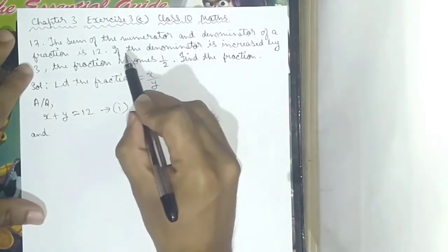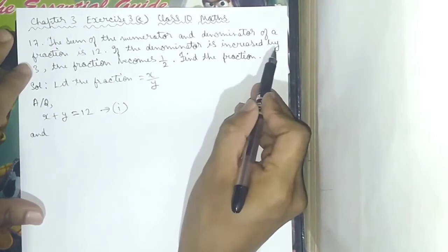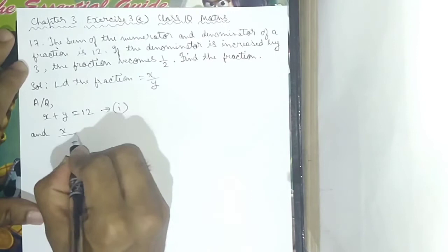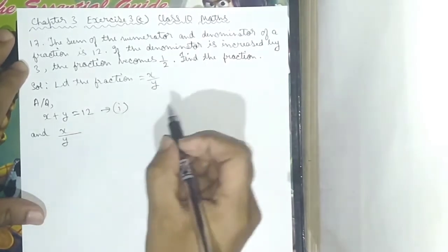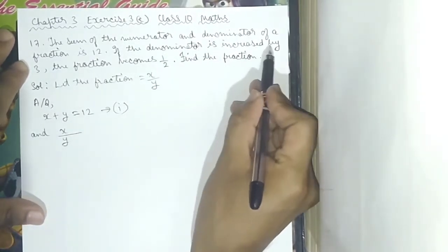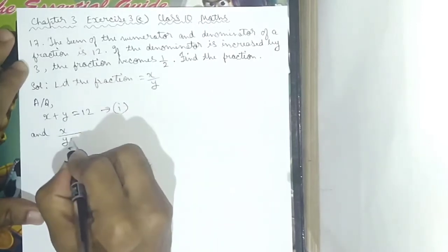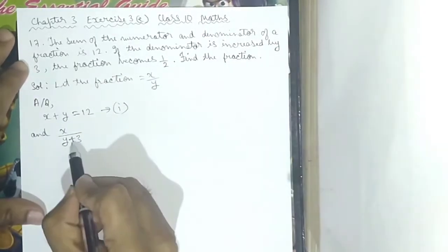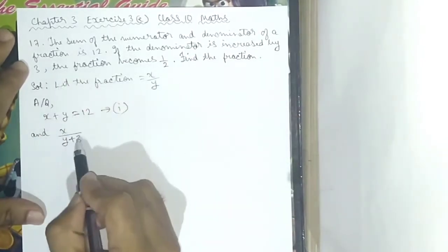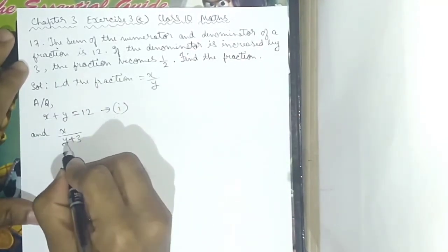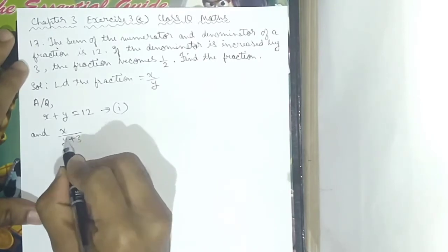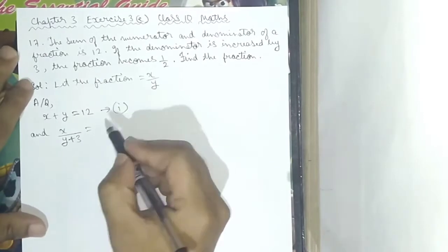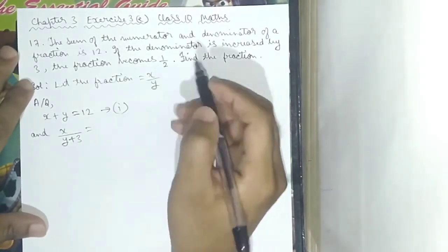If the denominator is increased by 3, the fraction is x by y. The denominator is increased by 3, meaning plus 3. So it will be x by y plus 3, and this is equal to 1 by 2.